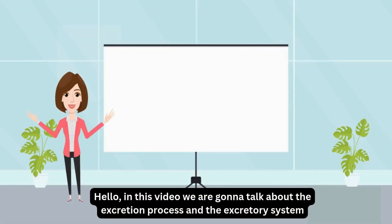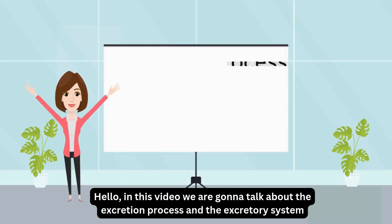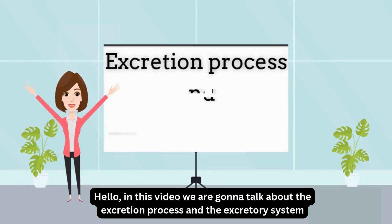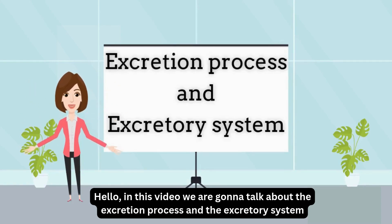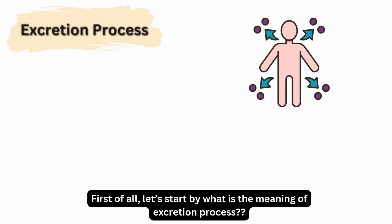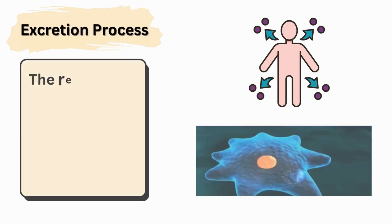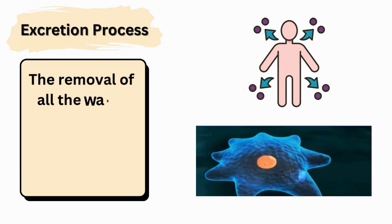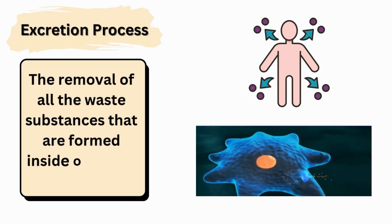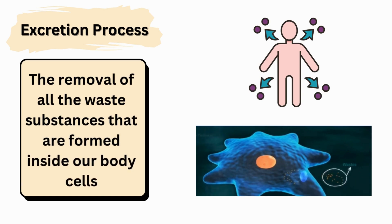Hello. In this video, we are going to talk about the excretion process and the excretory system. First of all, let's start by what is the meaning of excretion process. Excretion means the removal of all the waste substances that are formed inside our body cells.